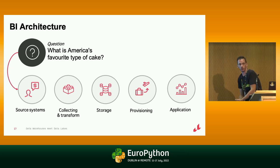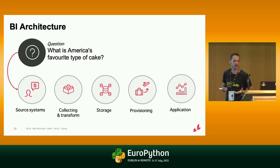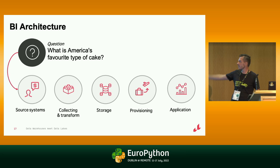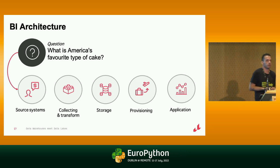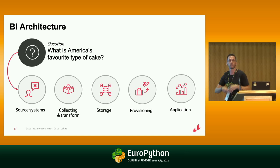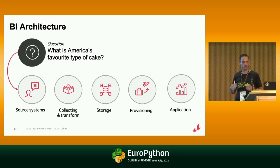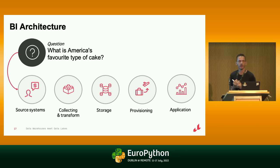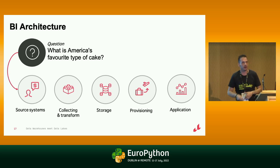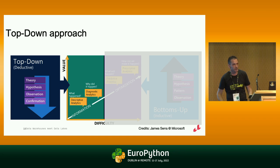This BI process always starts from a question. Starting from a question, we select the source system — data from an ERP — collect the data, store it, and create an application. It's the same for what I do for the European Union: instead of cake types, I work with 100 TB of data. I collect from online job websites, address quality issues, store the data, and create dashboards for stakeholders. This is a typical top-down approach.